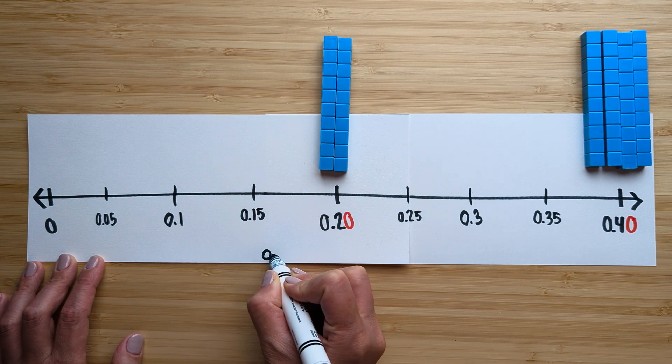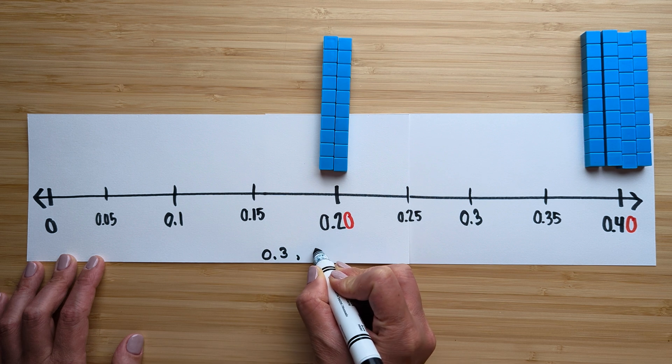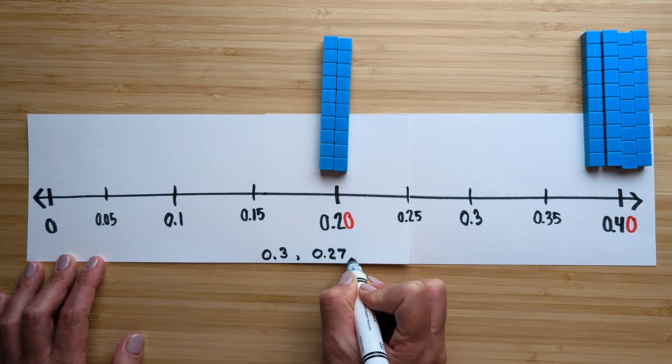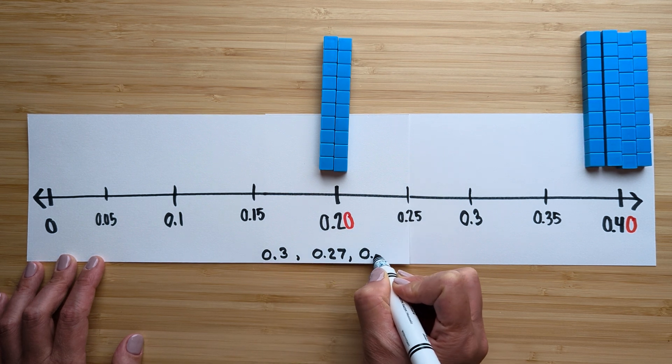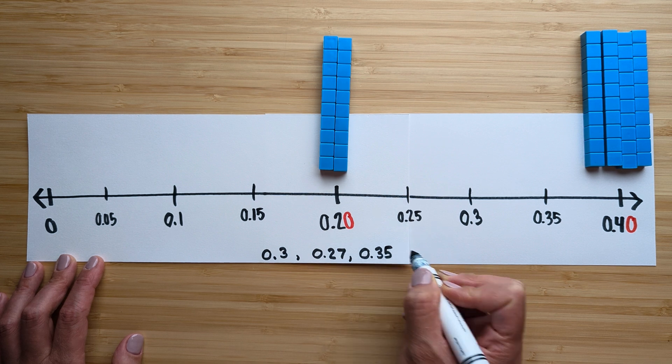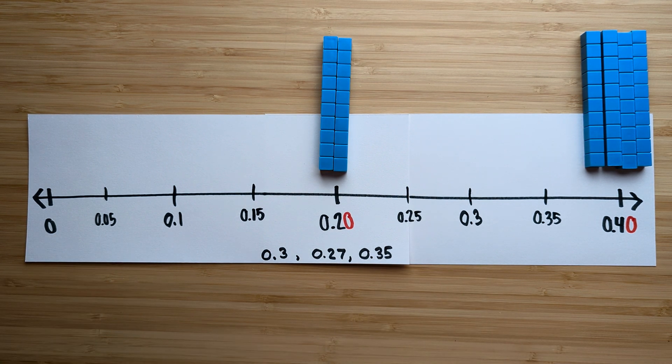So let's say we have, in no particular order, three tenths, twenty seven hundredths, and thirty five hundredths. Okay? If I were to plot these,